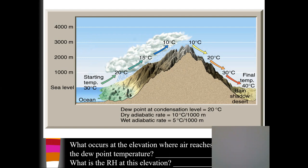The fact that air is cooling off as it rises because it's expanding, and as it sinks it's warming up because it's compressing as it goes back down to lower elevations. We talked about these different rates — the dry adiabatic rate, the rate that air cools before it's saturated, which is 10 degrees Celsius for every 1,000 meters that it rises.